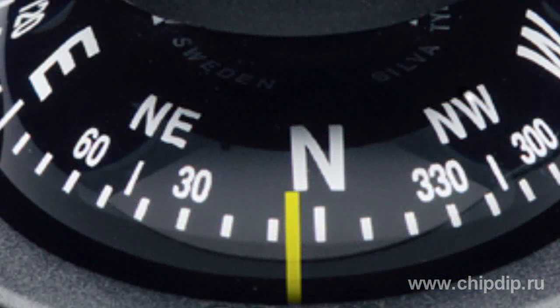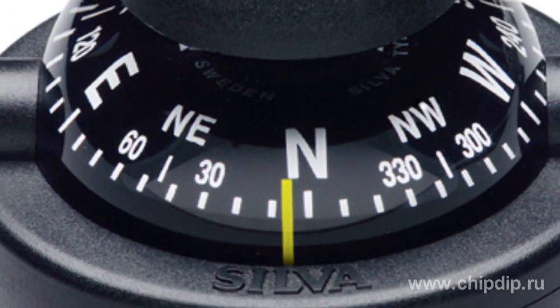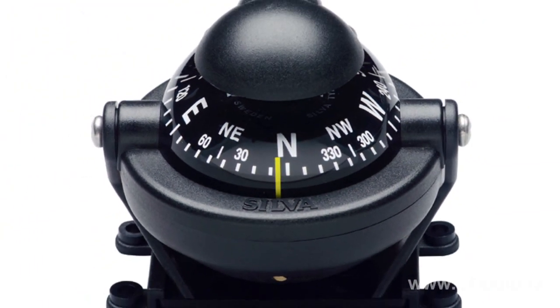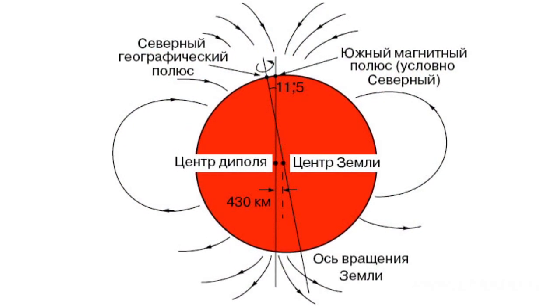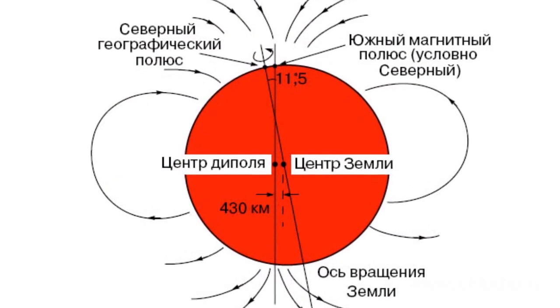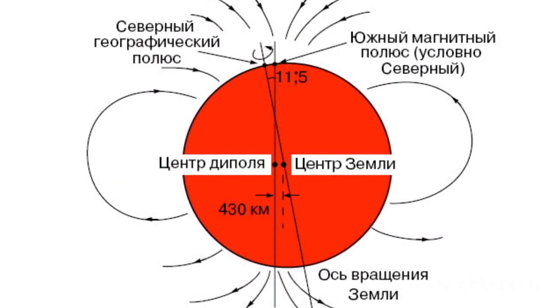Let us recall a compass needle. Its north pole points of course to the north. But as the same poles should push each other away, we conclude that in fact the magnetic pole located in the northern hemisphere is actually the south one from the physical point of view, and vice versa. The straight line that crosses the poles is called the magnetic axis, and the line of the circle lying on the plane perpendicular to the axis is called the magnetic equator.